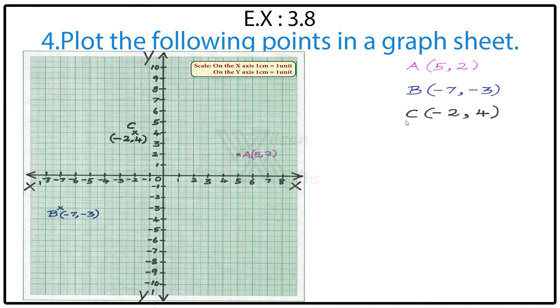Next, Point C: (-2, 4). On the X axis, go to minus 2. On the Y axis, go up to 4. This gives us the point (-2, 4).